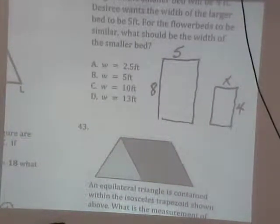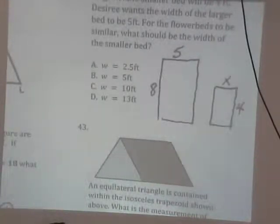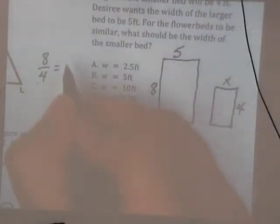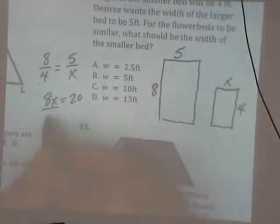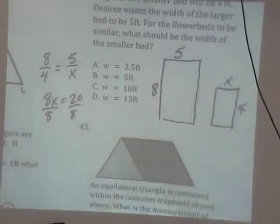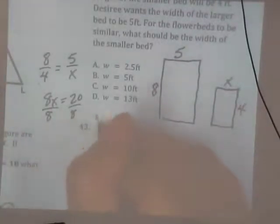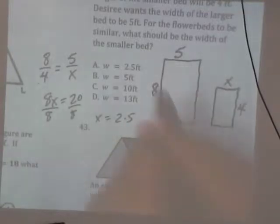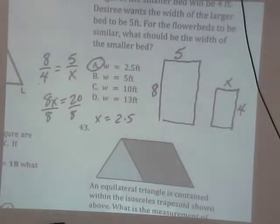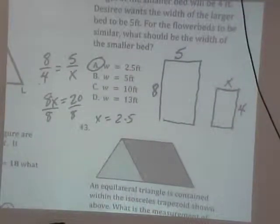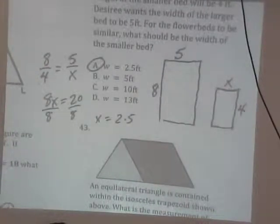One like we just did, yeah. 8 over 4 equals 5 over X. Perfect. So that's 8X equals 20. Divide by 8. What does that give you? 2 and a half? Yeah. 2.5. Questions on that one? 2.5.